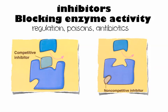Last, inhibitors. Sometimes enzymes need to be controlled by your body, a poison, or medicine. There are two types: a competitive inhibitor lands in the active site and competes with the substrate. A non-competitive inhibitor attaches to a secondary site on the enzyme, changing its shape so the substrate can't fit in. Poisons can inhibit enzymes in your nervous system, shutting it off. Antibiotics work by inhibiting bacterial enzymes.